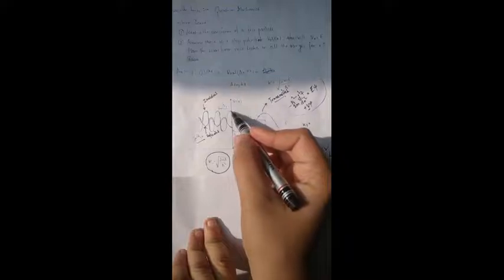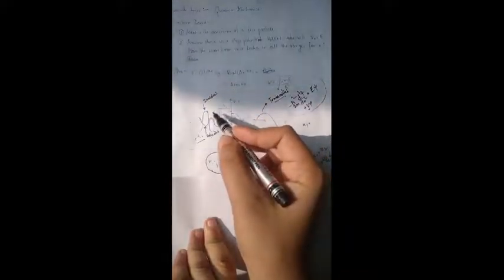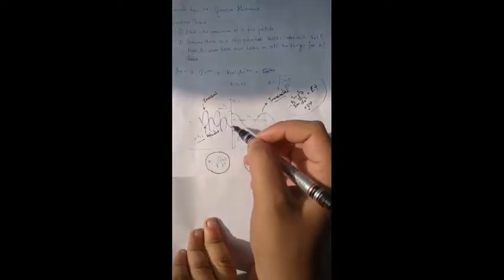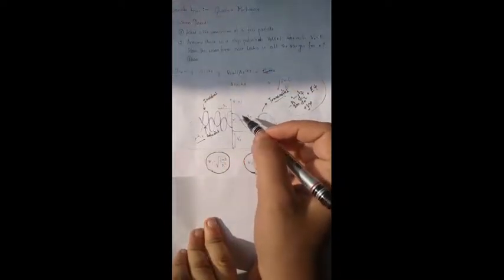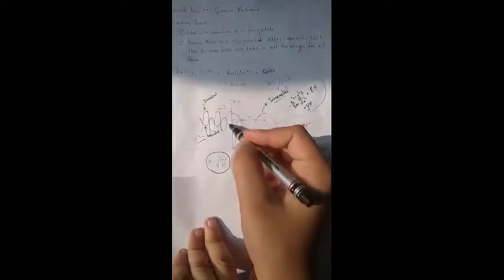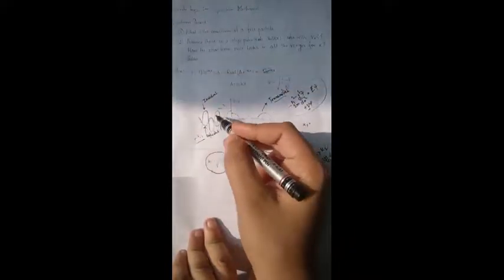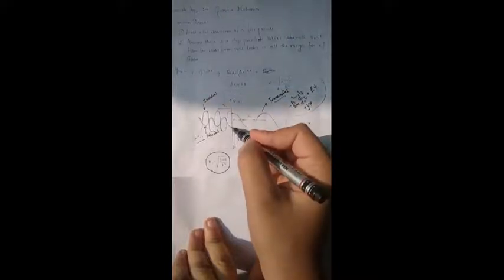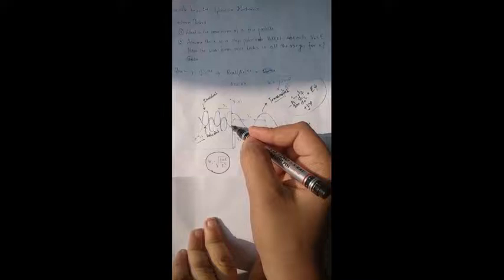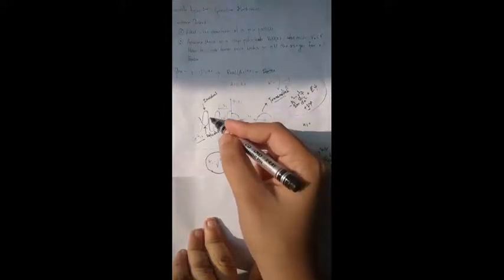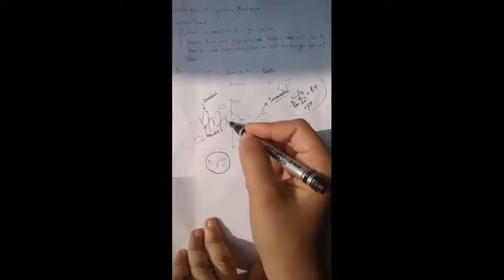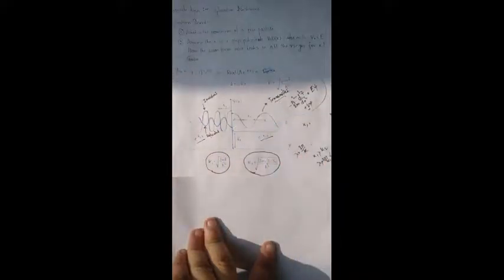We can see lambda 1 is smaller than lambda 2 in the picture also. Also, we can see that the incident wave has the highest amplitude. And if we take it as 1, we can say the amplitude of the transmitted wave and the reflected wave have smaller amplitudes.